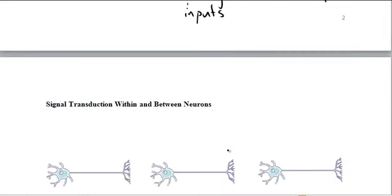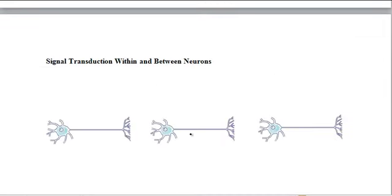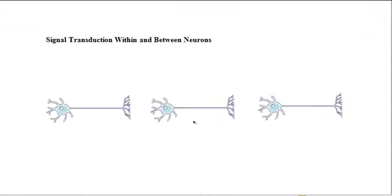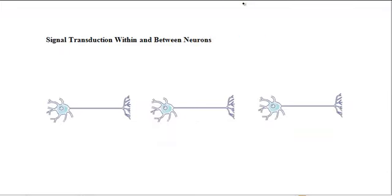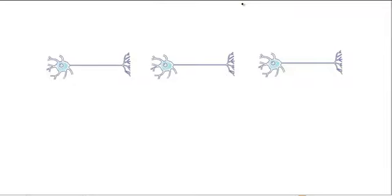To show you how that works, we're going to look at signal transduction within and between neurons. So we just want to go over some ideas that we've been working with, looking at the neuron. So here, this end of the neuron is called the, hopefully you've got it by now, the dendrite.